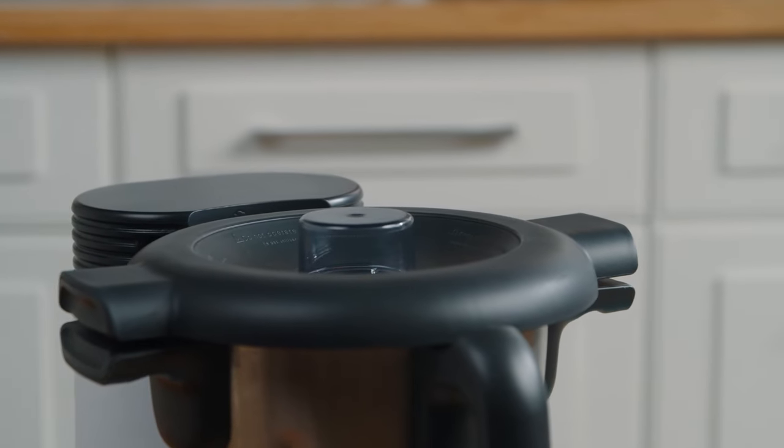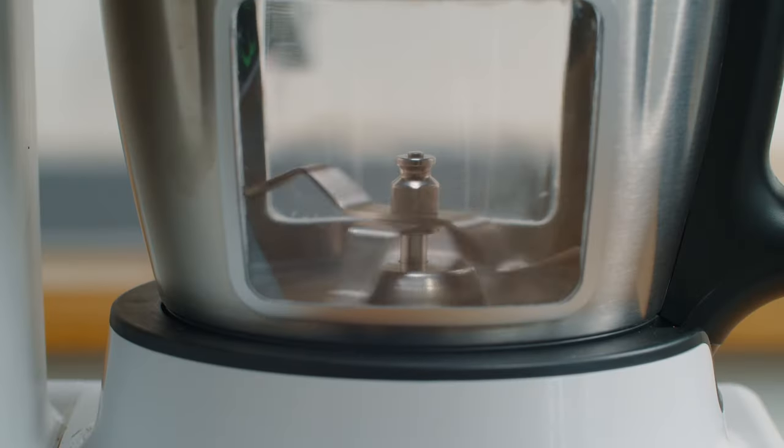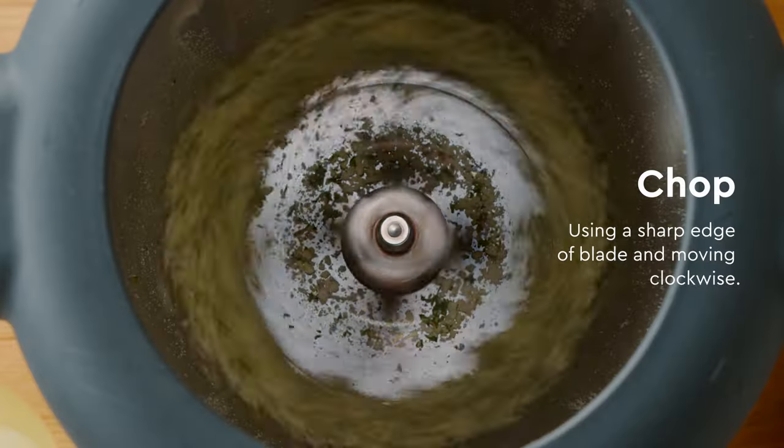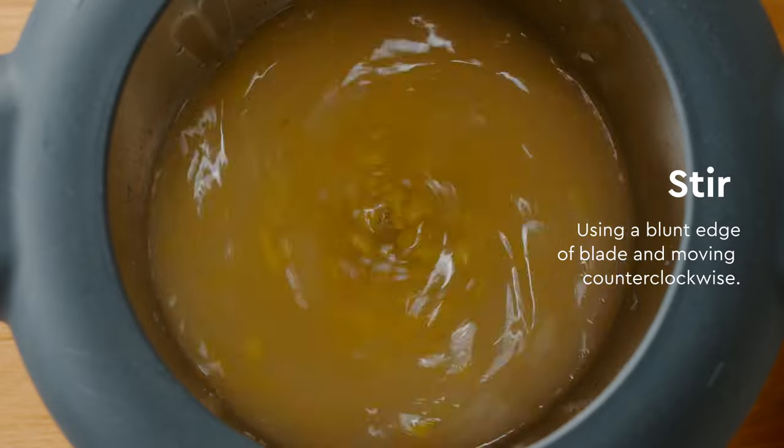Finally, we have the part of the locking system on the bowl for your safety. With the blade itself, we have two different sides of the blade. We have a chopping side and a stirring side. Depending on how you pre-program your Molto, you will either chop or stir depending on the rotation of the blade.